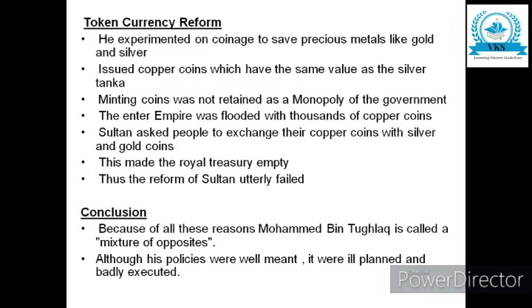The third experiment was the token currency reform. He experimented on coinage to save precious metals like gold and silver. He issued copper coins which had the same value as the silver tanka. Minting coins was not retained as a monopoly of the government — everyone was allowed to mint coins. The entire empire was flooded with thousands of copper coins. The Sultan asked people to exchange their copper coins with silver and gold coins, and this made the royal treasury empty.